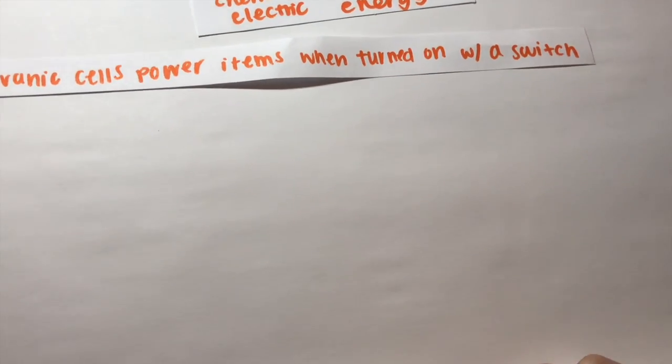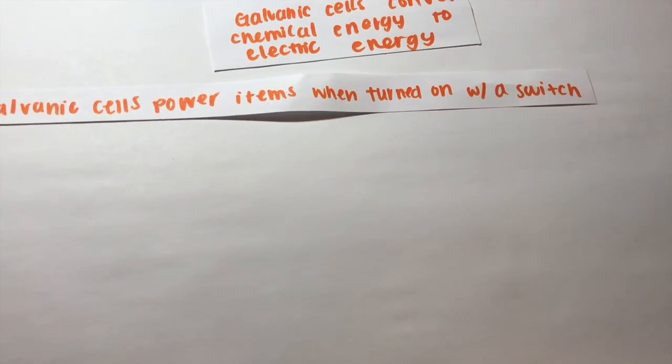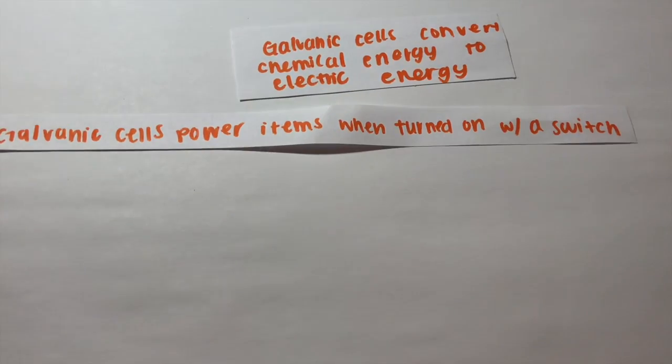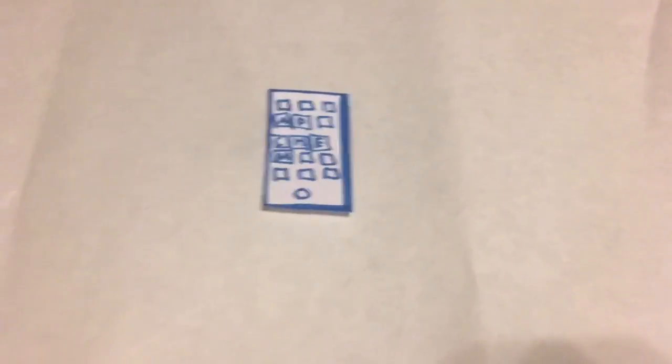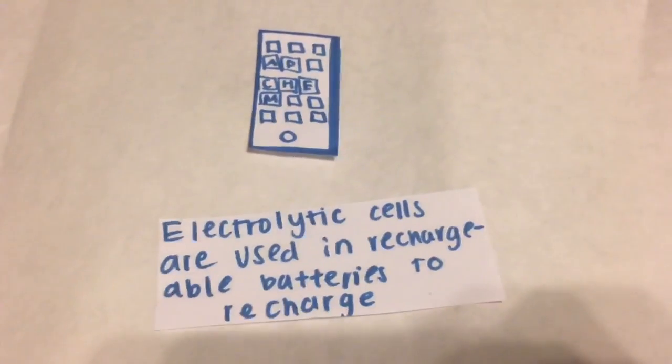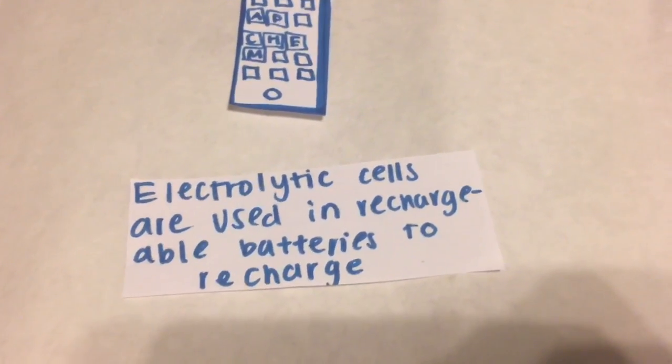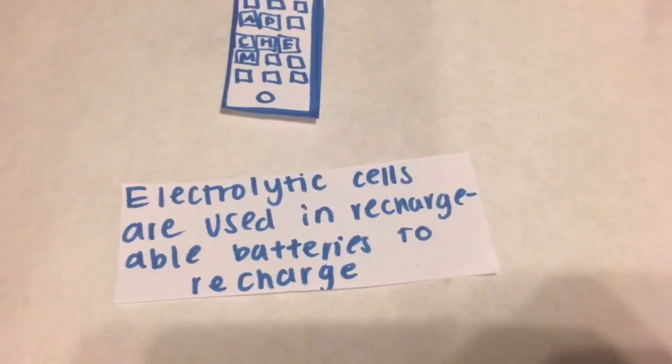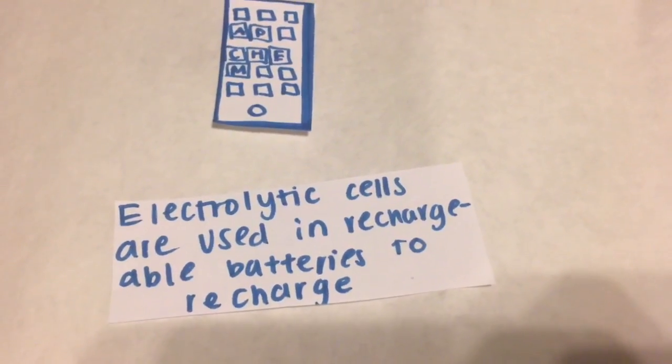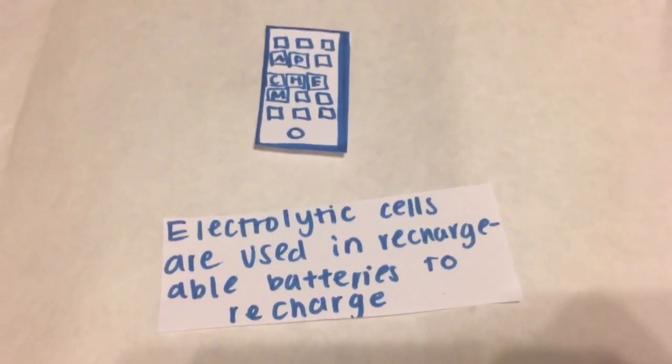Galvanic cells power items when turned on with a switch. To power a phone, one would use the electrolytic cells and a battery. Then, energy stored in a galvanic cell would be released when the on button was switched on because this process would close the circuit and allow for the flow of energy.